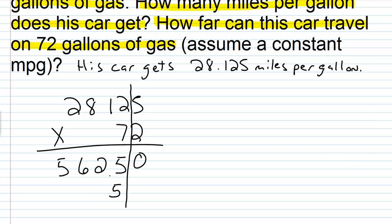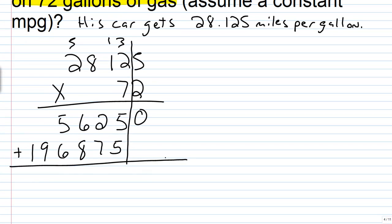7 times 5 is 35. 7 times 2 is 14, plus 3 is 17. 7 times 1 is 7, plus 1 is 8. 7 times 8 is 56. 7 times 2 is 14, plus 5 is 19. Let's go ahead and add.